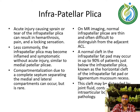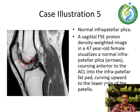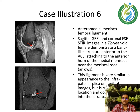This cleft may be distended by joint fluid, contain intra-articular bodies, or other pathology. Case illustration 5 shows a normal infrapatellar plicae. A sagittal FSE proton density weighted image in a 47-year-old female visualizes a normal infrapatellar plicae shown by the arrows, coursing anterior to the ACL into the infrapatellar fat pad curving upward to the lower pole of the patella.